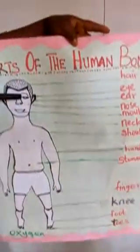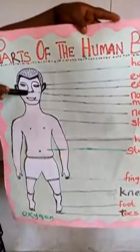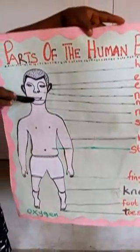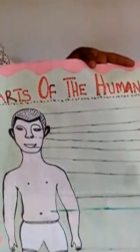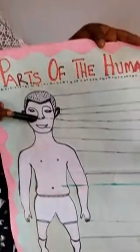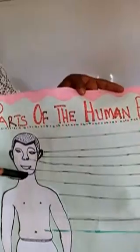We have the hair — the hair on our head. The eye. Touch your eyes. This is my eye. The nose. Touch your nose. This is my nose. You can see the nose. The mouth. Touch your mouth. This is my mouth.